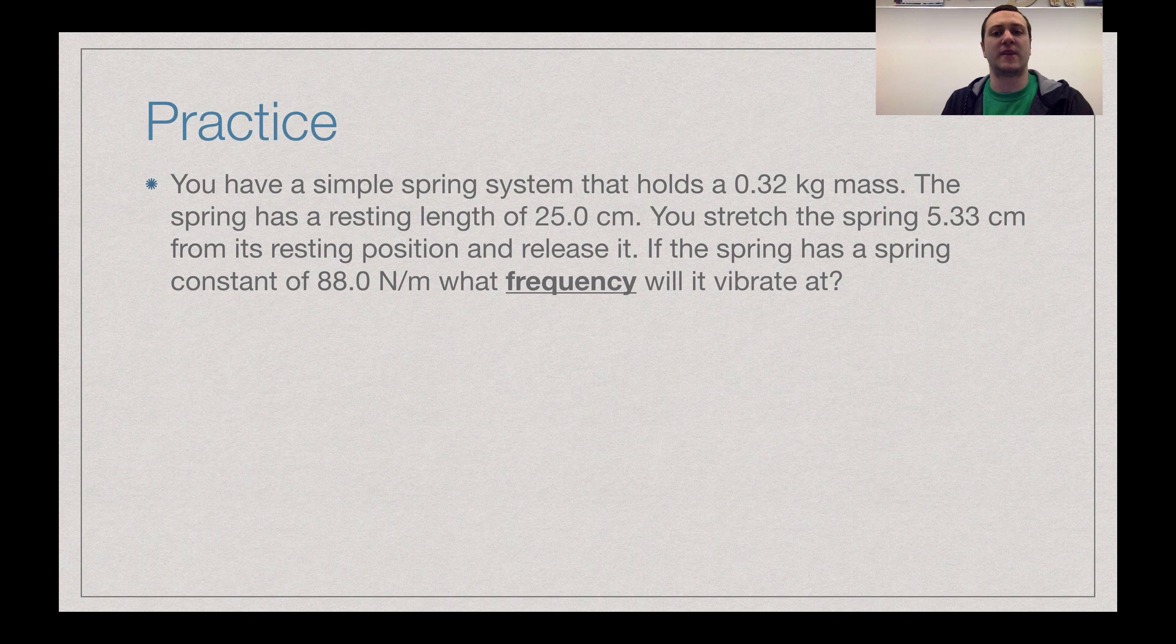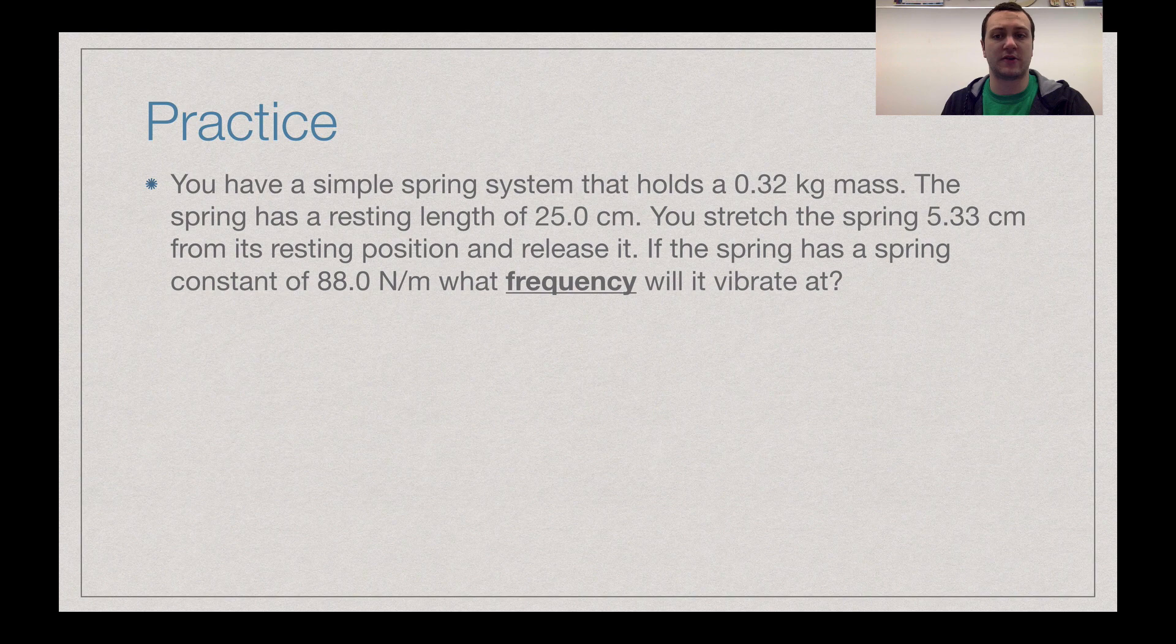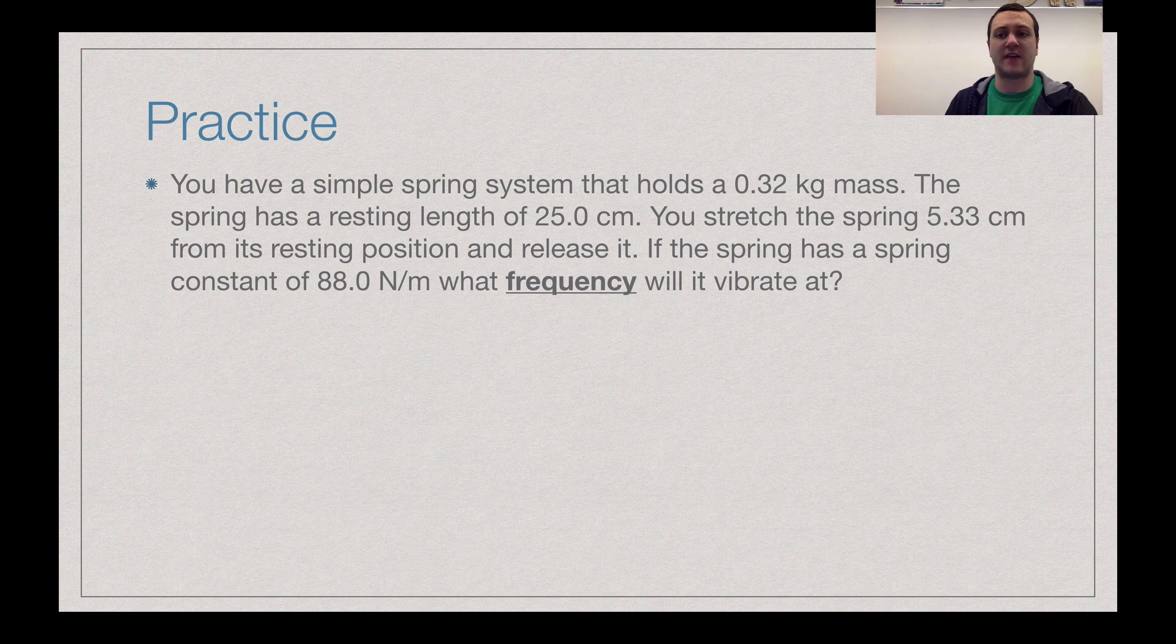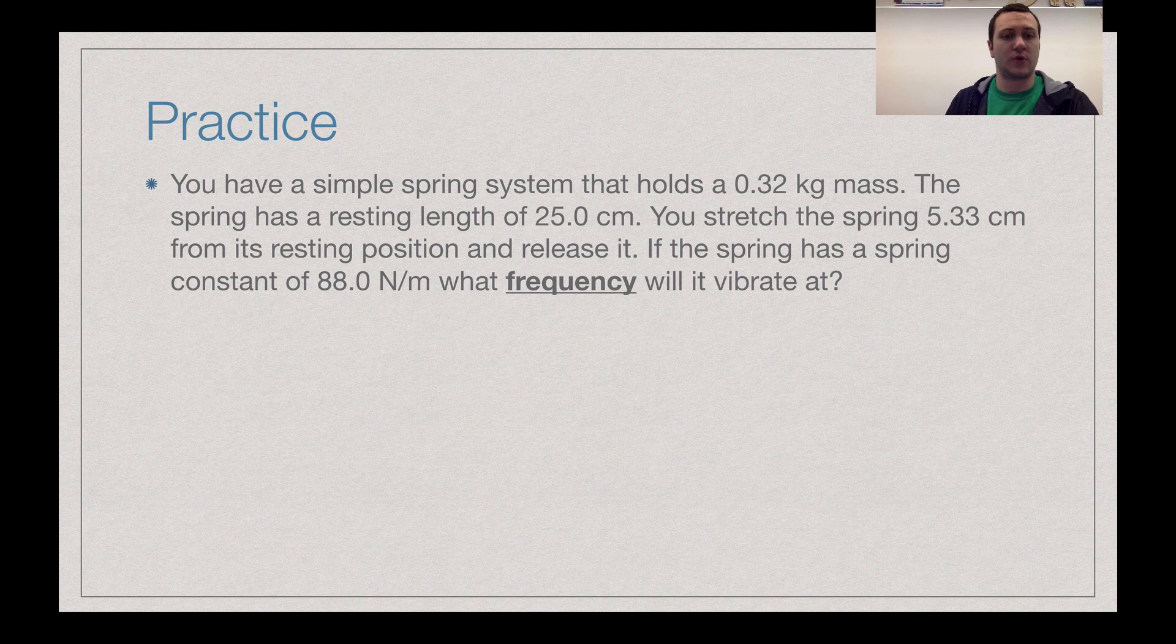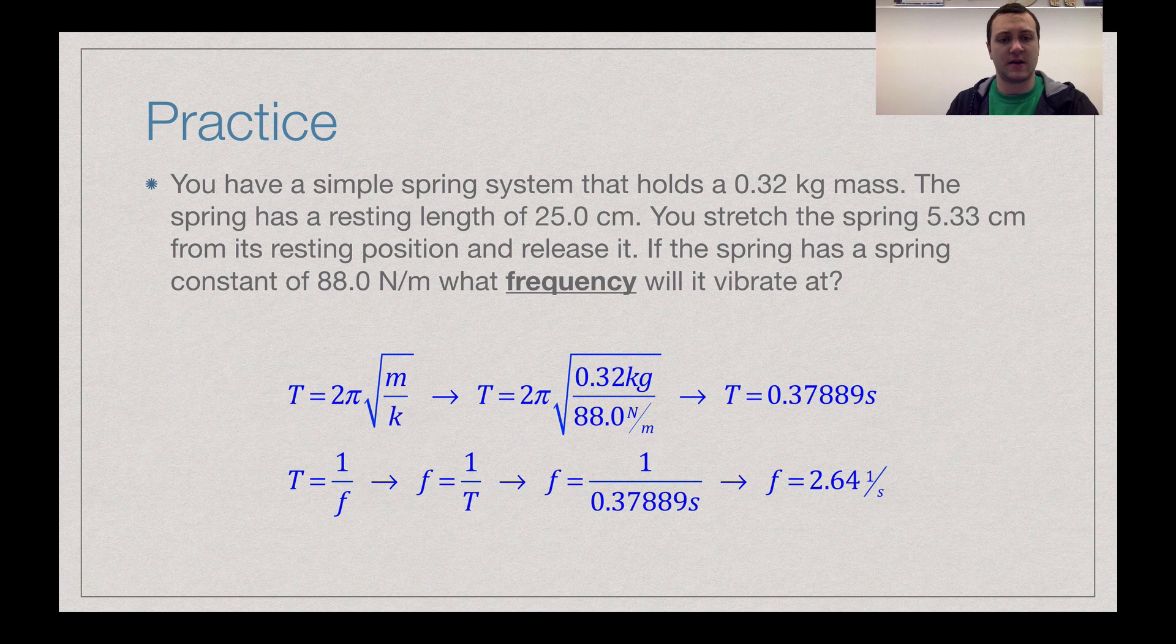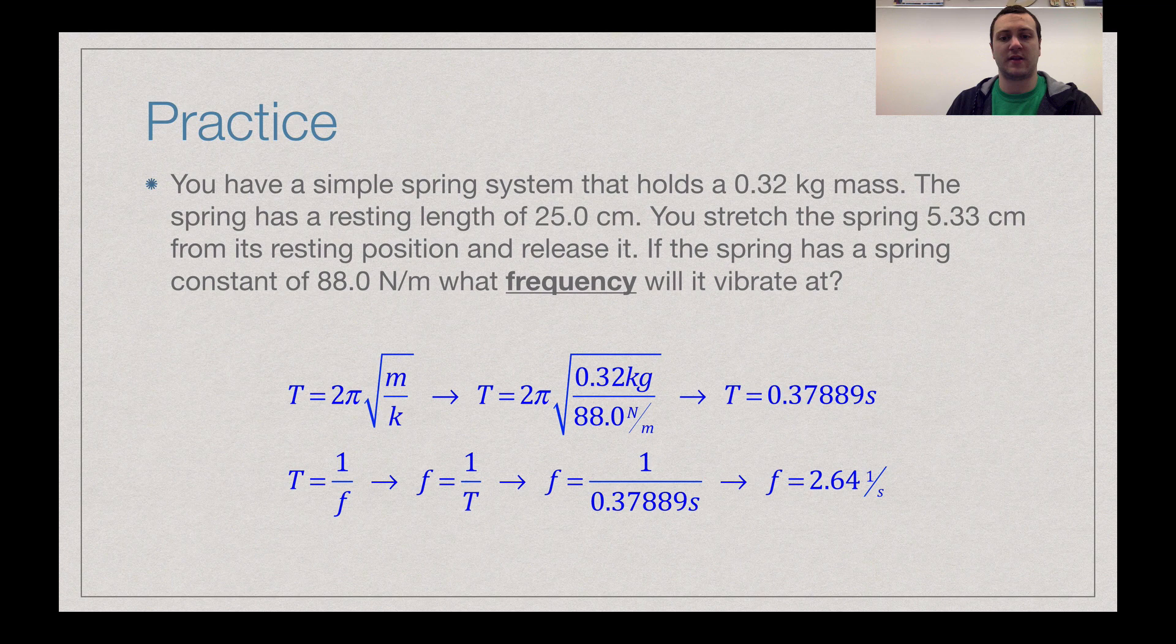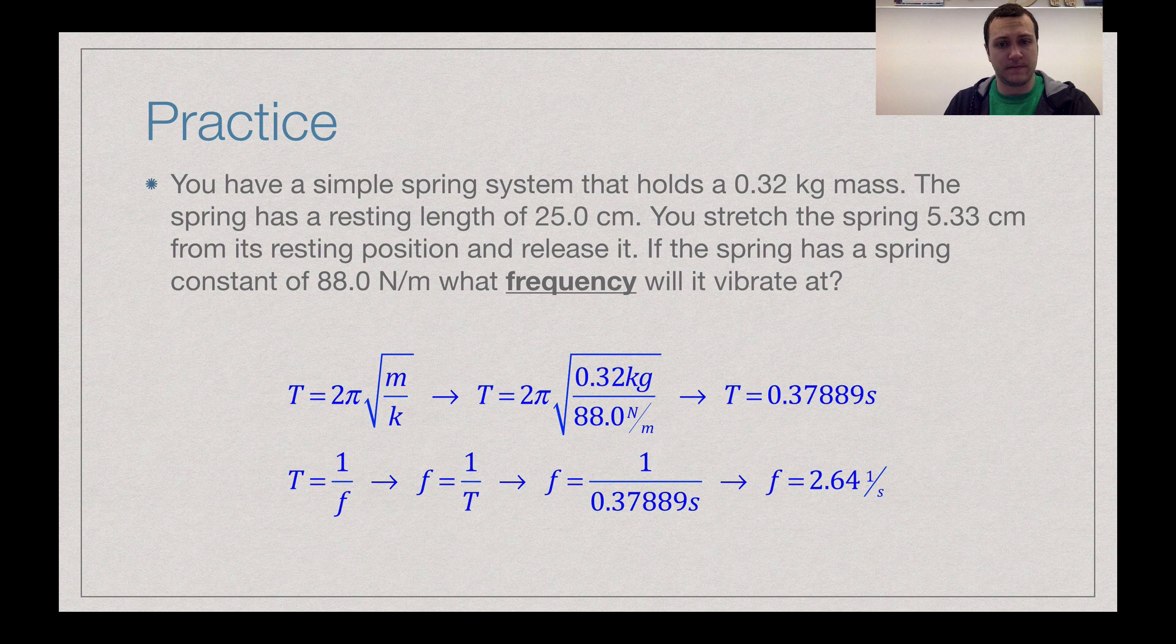So way that you can break this down, mass matters on a mass spring system. So at 0.32 kilograms, you will need that. The spring has a resting length of 25 centimeters. So that's going to be equilibrium will be 25 centimeters. When you stretch it, that 5.33 centimeters, that becomes your X value. That is X. So we know the spring constant what frequency. So we need to find the period of oscillation first. Using the formula from the previous slide, 2 pi times the square root of the mass divided by the stiffness of the spring. So 0.32 kilograms over 88 newtons per meter. Take a square root of that times 2 pi to get your period.